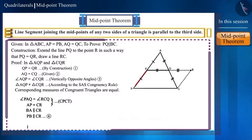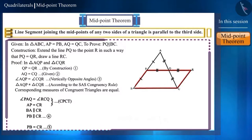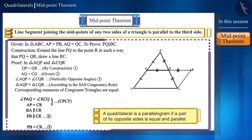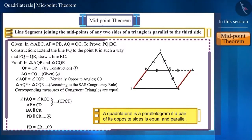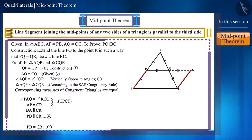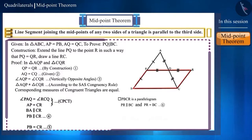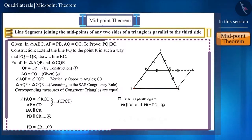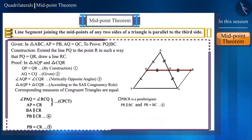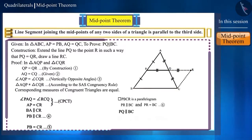Since side AP is equal to side PB, and side AP is also equal to side CR, the sides PB and CR will also be equal. Friends, look at the quadrilateral PBCR — it has a pair of opposite sides that are parallel and equal. A quadrilateral is a parallelogram if a pair of its opposite sides is equal and parallel. Therefore, PBCR is a parallelogram. Hence, the sides PR and BC will be parallel and equal. Since points P, Q and R are on the same line, the line segment PQ and the side BC will also be parallel. In this way, we prove the midpoint theorem.